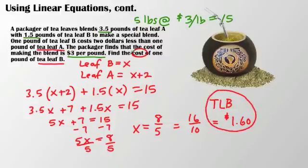Had you worked with leaf A as your x, then leaf B would have been x minus 2. Just keep that in mind. And then when you solved for x, you would have actually been solving for leaf A. At which point you would have had to subtract to find your answer. Alright.